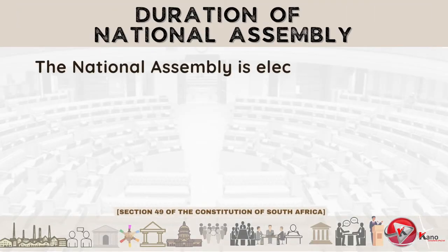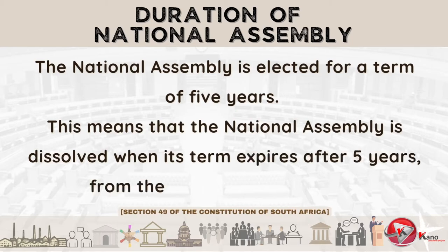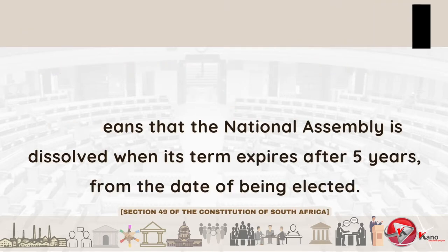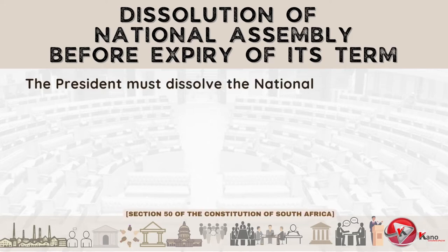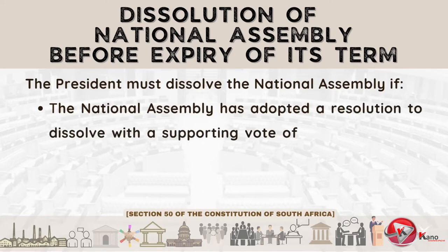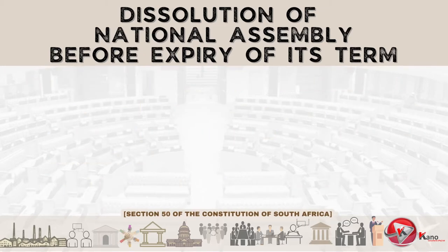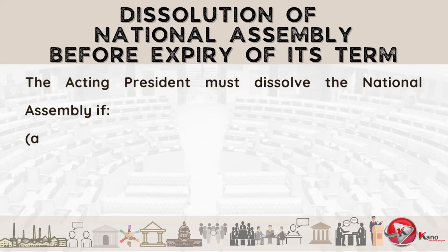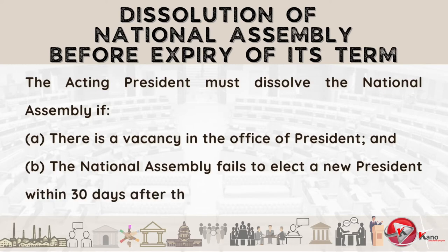The National Assembly is elected for a term of five years, meaning that the National Assembly is dissolved when its term expires after five years from the date of being elected. The National Assembly may also be dissolved in terms of Section 50 of the Constitution, which provides that the President must dissolve the National Assembly where it has adopted a resolution to dissolve with a supporting vote of a majority of its members, and three years have passed since the National Assembly was elected. Section 50 also provides that the Acting President must dissolve the National Assembly if there is a vacancy in the Office of President and the National Assembly fails to elect a new President within 30 days after the vacancy occurred.